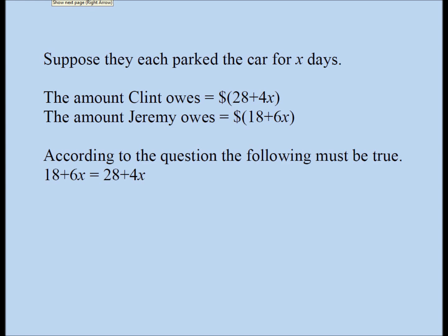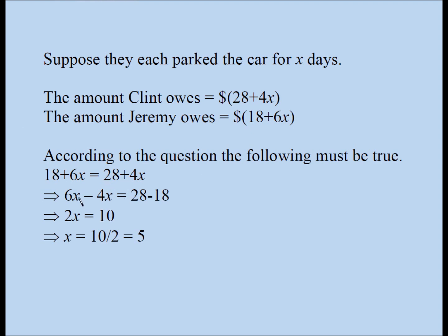You can use any method — I'll use a certain method. I subtracted 4x from both sides, giving 6x minus 4x, and I subtracted 18 from both sides, leaving 28 minus 18 on the right. 28 minus 18 is 10, and 6x minus 4x is 2x. To isolate x, I divide both sides by 2 and get x equals 5. So that's our answer. Since it's an algebra question, it's a good idea to check your answer.